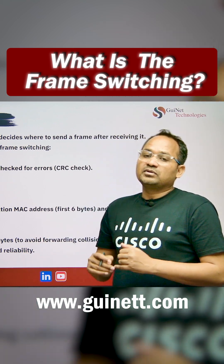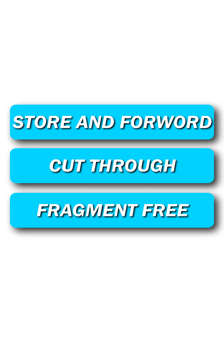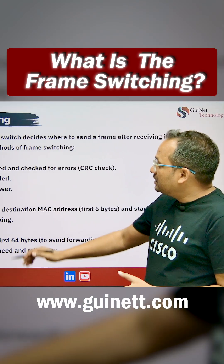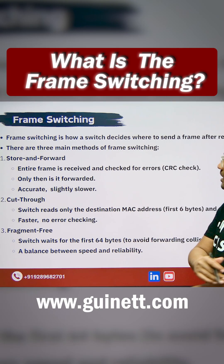There are three main methods for frame switching. The first one is Store and Forward, the second is Cut Through, and the third is Fragment Free.